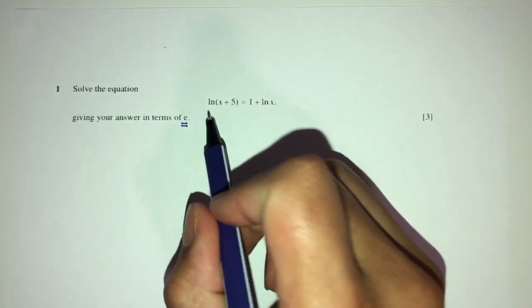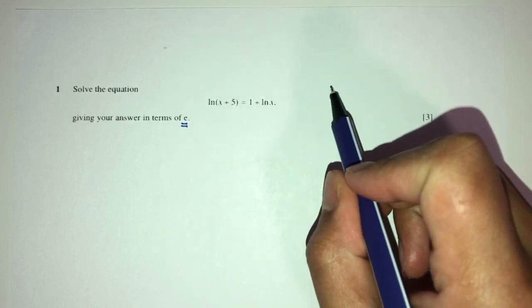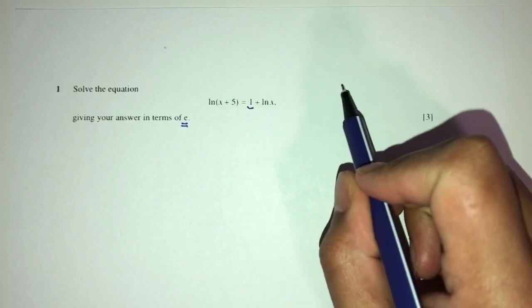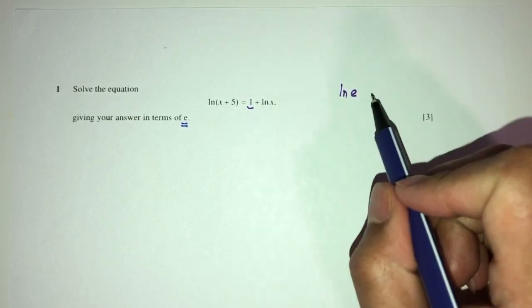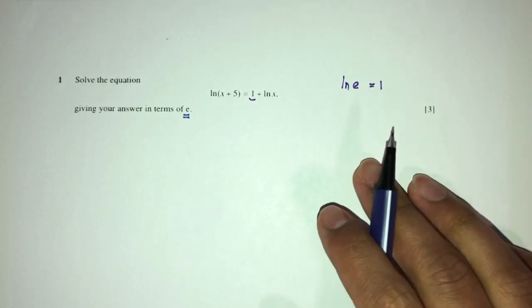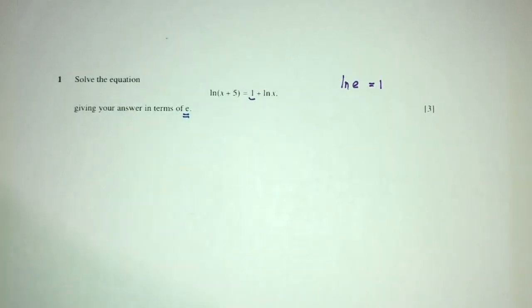So here I have ln of this, here we have one plus this. Now we should know ln, what is one? One is simply ln of e is equal to one. So let's replace this value over here. Let's say we don't know this, whatever, let's forget about this.